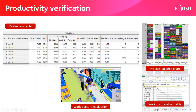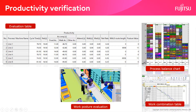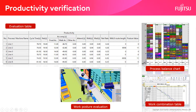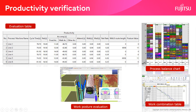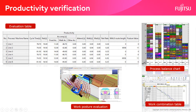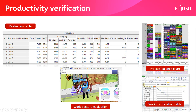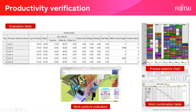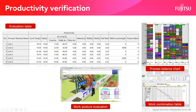When the layout of the production line, the placement of workers, the operation procedure, and the walking route are determined and the simulation is executed, the process balance table and work combination table are automatically created. In addition, the evaluation table shows the results of numerical evaluation of productivity and workability. Therefore, you can check with good visibility whether the work can be carried out at the target takt time and where the bottleneck process is.